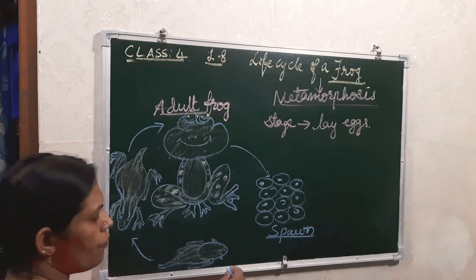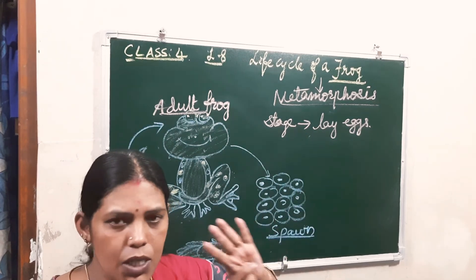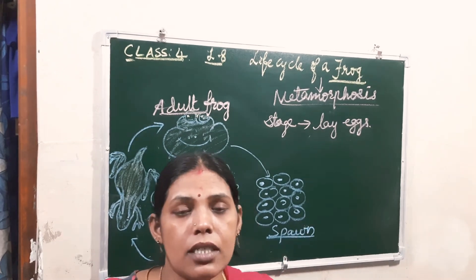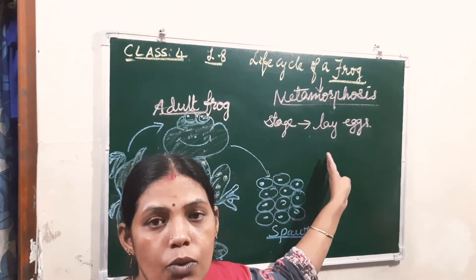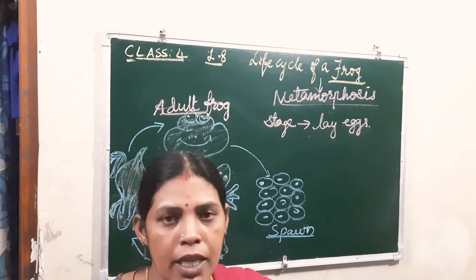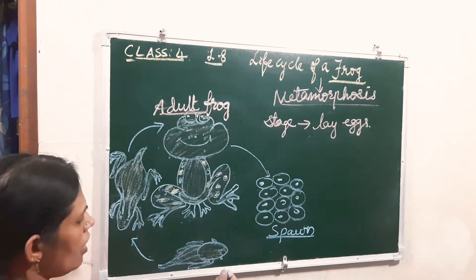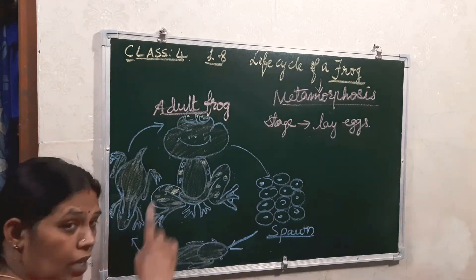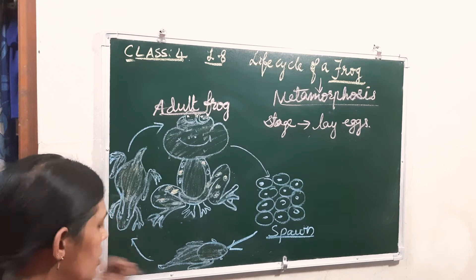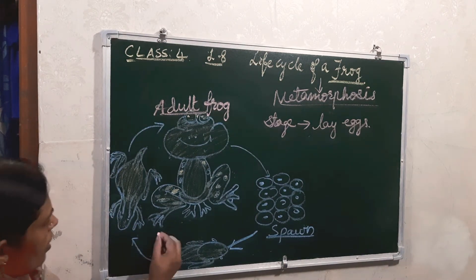When the egg hatches, the larva comes out. That is known as the tadpole. This is the tadpole — the larva that comes out from the egg.